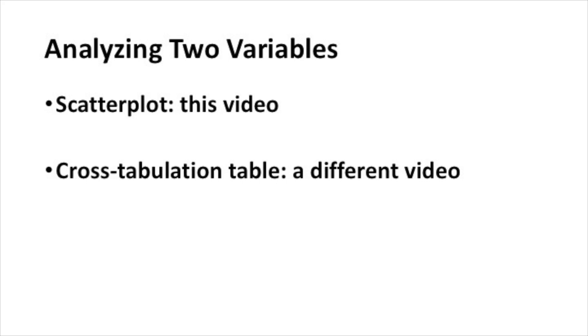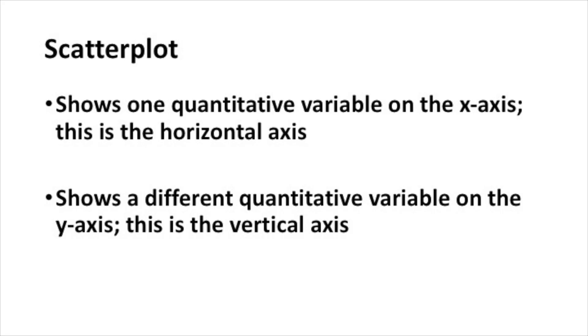There are different ways that we can analyze the relationship between two variables. In this video, we'll talk about a scatter plot, whereas in a different video, we'll talk about a cross-tabulation table. A scatter plot is used to show the relationship between two quantitative variables. You put one quantitative variable on the x-axis, which is the horizontal axis, and then you put a different quantitative variable on the y-axis, which is the vertical axis.